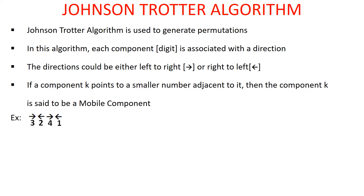Let's understand with an example. Here 3 is pointing to 2, which is a smaller integer, therefore 3 is a mobile component. 2 is pointing to 3, therefore 2 is not a mobile component. 4 is pointing to 1, a smaller number, therefore 4 is a mobile component. 1 is pointing to 4, a bigger number, therefore 1 is not a mobile component. So 3 and 4 are mobile components whereas 1 and 2 are not.